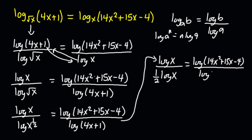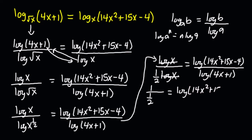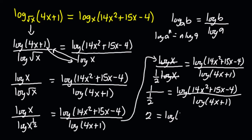These two logs will cancel out, so we're left with 1 divided by 1/2, which equals 2. So 2 is equal to log of (14x² + 15x − 4) divided by log of (4x + 1).